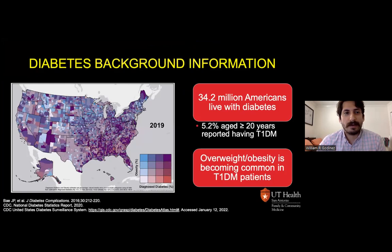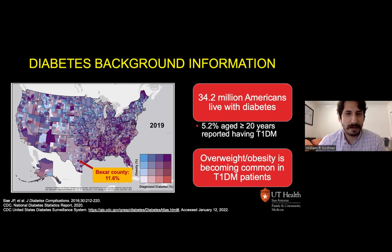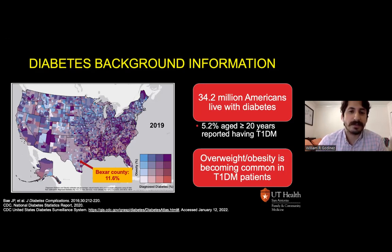It may seem that all we talk about in the ambulatory care setting is diabetes — and that's because it's very prevalent. An estimated 34.2 million Americans are currently living with diabetes, with 5.2% of those having type 1. Closer to home, almost 11.6% of our Bexar County has diabetes. Talking more specifically about type 1: generally most patients are lean at diagnosis, however it is becoming more common for patients to be overweight and obese at the time of type 1 diagnosis.